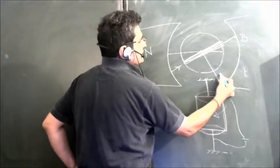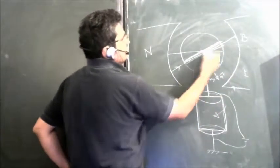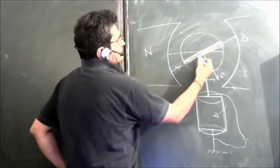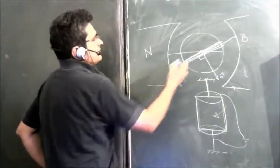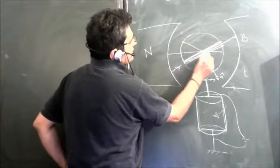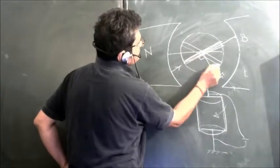This is the area vector and this is the magnetic field. So the area vector is always perpendicular to the magnetic field.